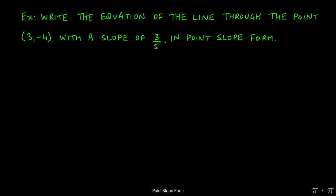Let's say we're asked to find the equation of the line that passes through with a slope of 3 over 5. We want the answer to be represented in point-slope form.